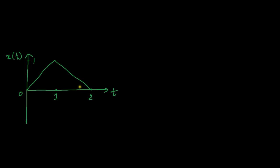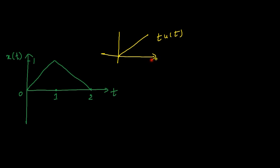Sometimes you may need to represent it only in terms of the unit step function, or only in terms of the ramp function. This is one example where you need to represent it only in terms of the ramp function. A ramp function looks like this — it is t·u(t), where the horizontal axis is time and the vertical axis is y. This starts at 0.